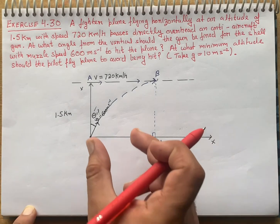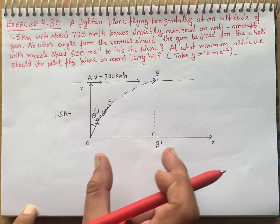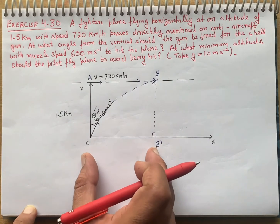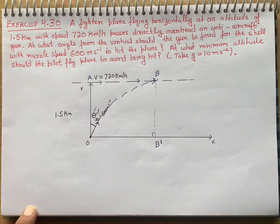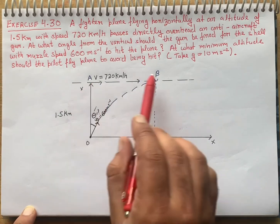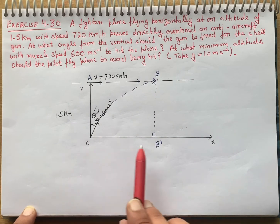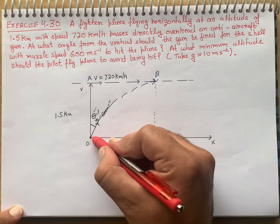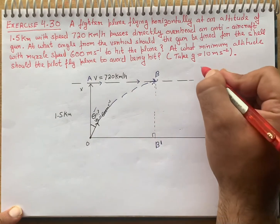From the symmetry of the diagram, points A, B, and O, B' are the same. This means that distance A-B is equal to distance O-B'.